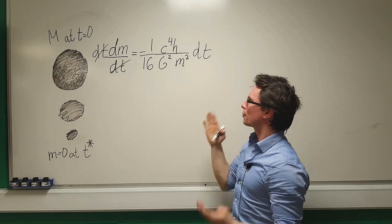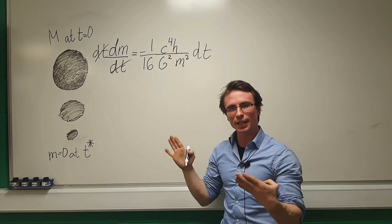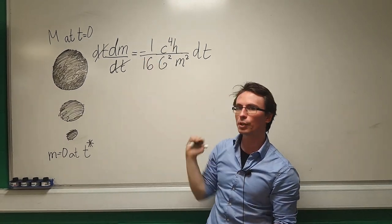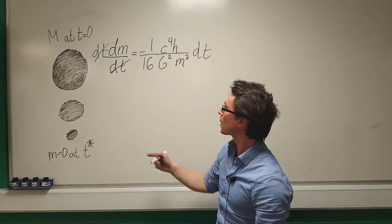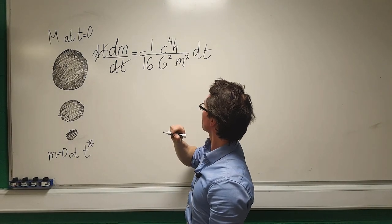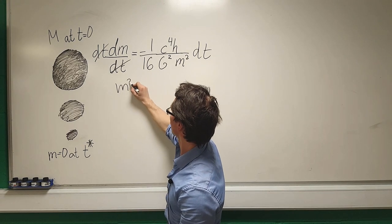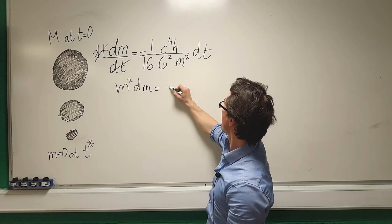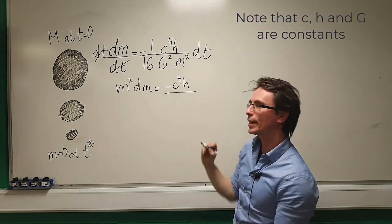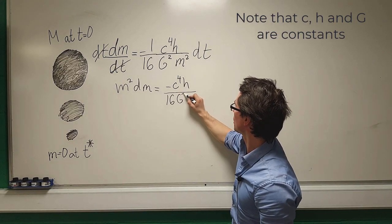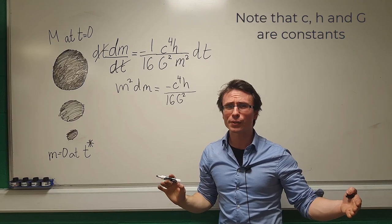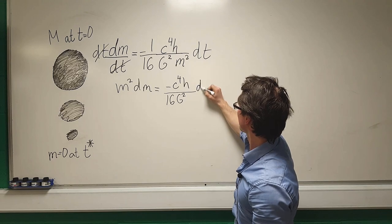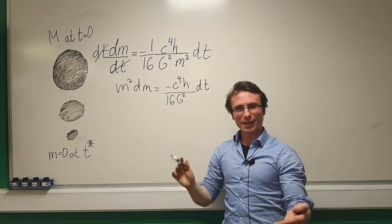Now what we can do is we can move all the terms that have an m on the left hand side of the equation and then we'll also be integrating one side with respect to m and one side with respect to dt. If we have an m squared here, what we're left with is m squared dm which will then be equal to minus c⁴ multiplied by h divided by 16 g squared. All of these are absolute constants so neither of them depend on time nor on the mass and then we have a factor of dt.